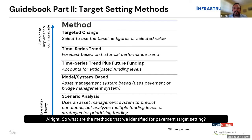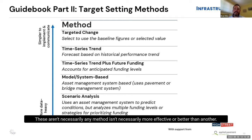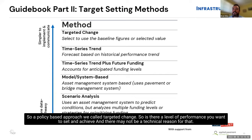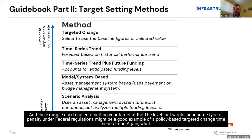The methods identified for pavement target setting are listed in order of ascending technical robustness. A policy-based approach is called targeted change: is there a level of performance you want to set and achieve? Setting your target at the level that would incur some type of penalty under federal regulations might be a good example of a policy-based targeted change.